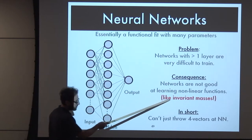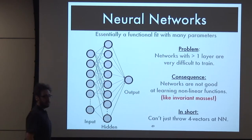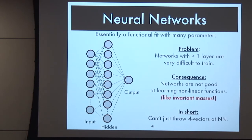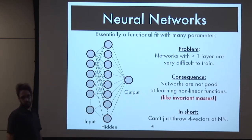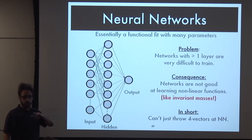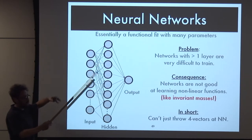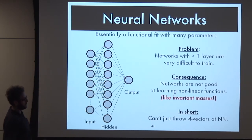A lot of times in particle physics we need very nonlinear functions. Say you're looking for a particle and all you have is the Cartesian four-vectors of your particles - you didn't know there's a huge resonance in there. A network like this can't find the resonance; it can't do an invariant mass calculation. There's a square root in there, there's stuff squared - it just doesn't have the tools necessary to assemble these mini functions into the function you need.